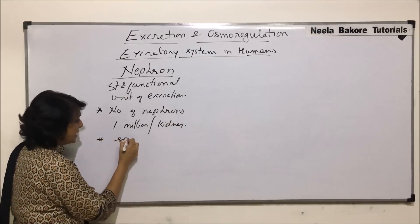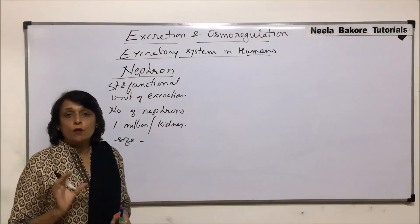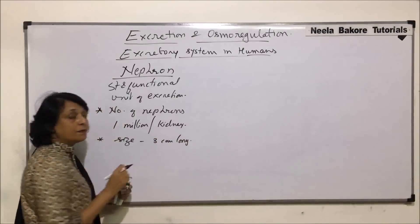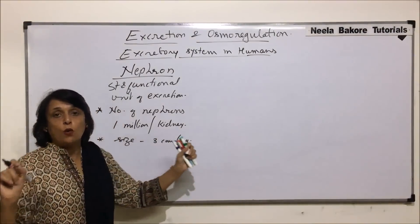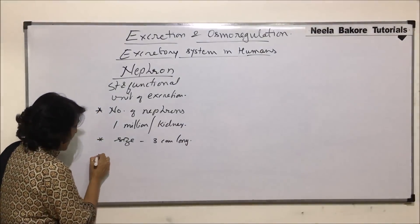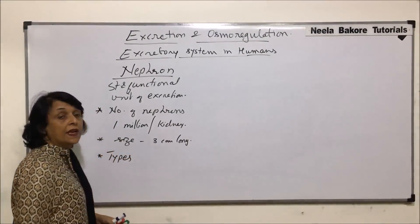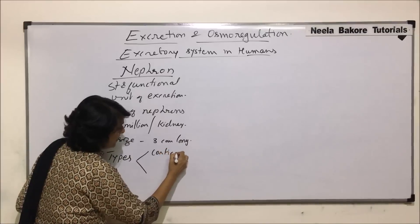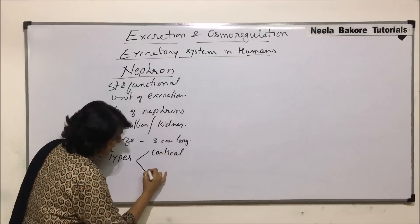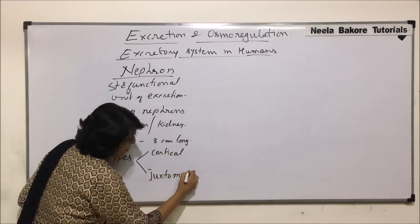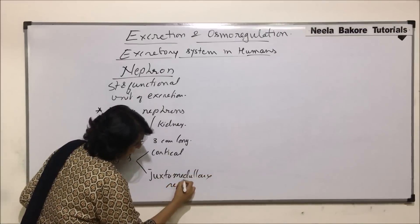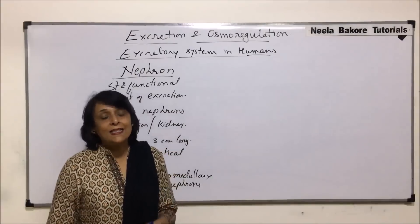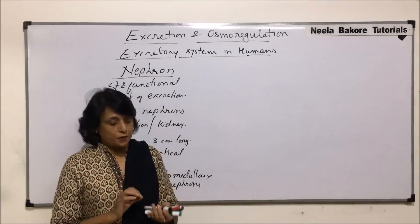Coming to size, the nephron is about three centimeters long — that means if we completely stretch it open, it is about three centimeters long. Now, coming to the types, there are two types of nephrons: one, cortical nephrons, and second, juxtamedullary nephrons. These names are given on the basis of their location as well as certain differences which they have.